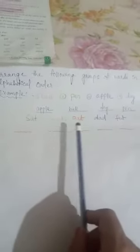Here another example is there. Five words are there. Here five words are there: sad, mad, pat, dad, fat.